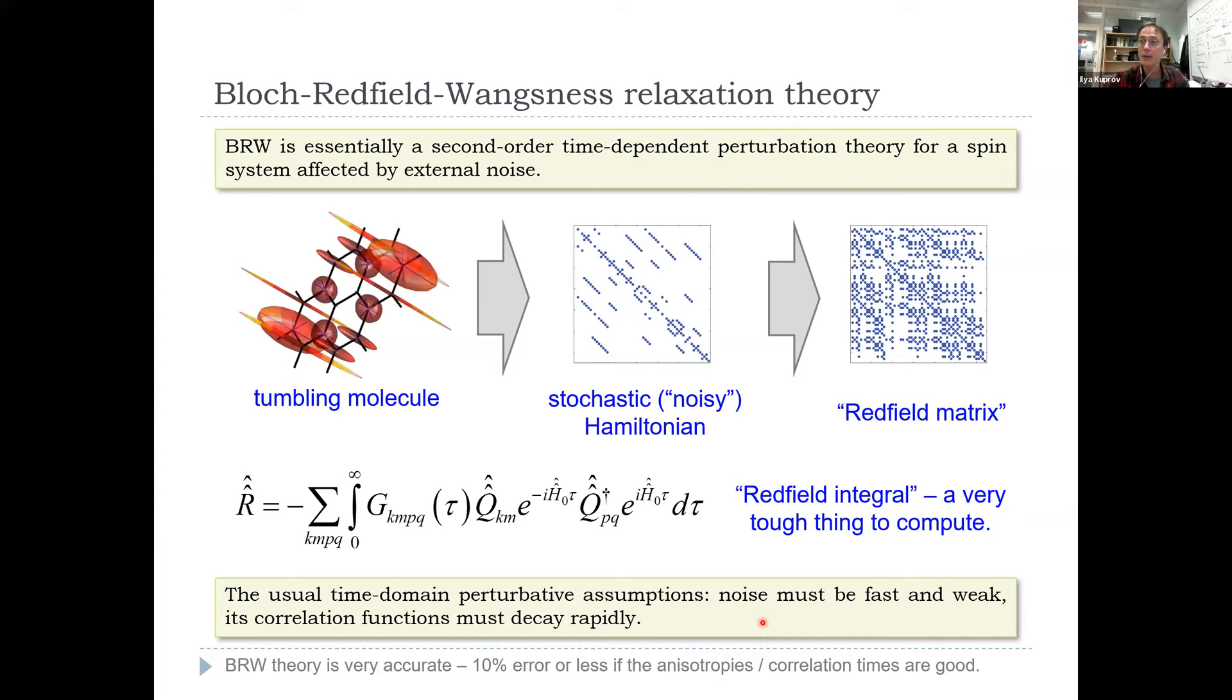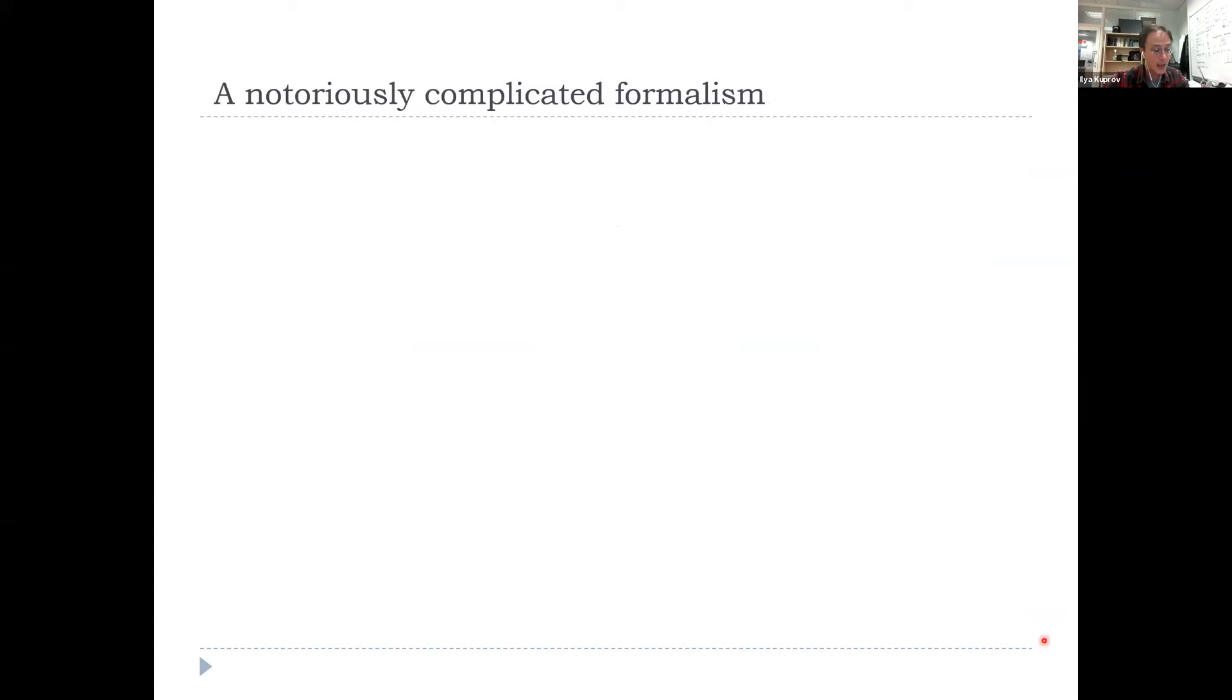The usual time domain perturbative assumptions: the noise must be fast, faster than the dynamics. It must be weak, weaker than the Hamiltonian, and its correlation functions must decay sufficiently rapidly for certain separation of time scales to exist. That having been said, Redfield theory is highly accurate, unusually accurate for such things in quantum mechanics. Typically you would be able to reproduce your experiments to 10% accuracy or better if all your interaction anisotropies and statistics of the noise are well measured.